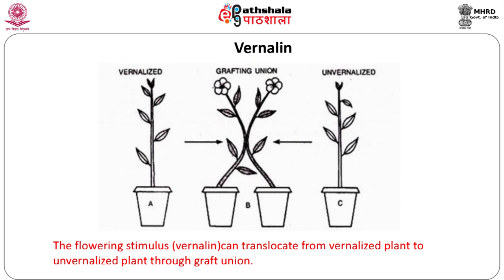Various experiments have revealed that during cold treatment, meristematic cells found either in the stem apex or leaves are stimulated to produce some substance. The presence of such a substance has been demonstrated by grafting a vernalized plant onto another non-vernalized plant at normal temperatures. If the cut shoot tip of a vernalized plant is grafted on the decapitated stem of a non-vernalized plant, flowering is induced in the latter. This indicates that a substance called vernalin is synthesized in vernalized plants and transported to the non-vernalized plant to induce flowering. Attempts to isolate and identify vernalin have failed.